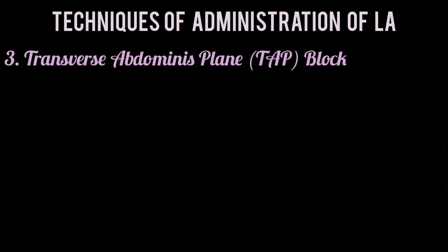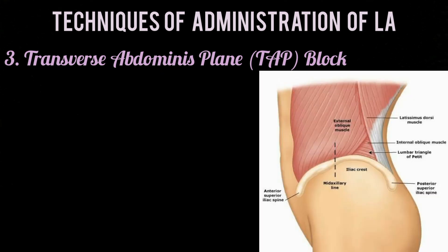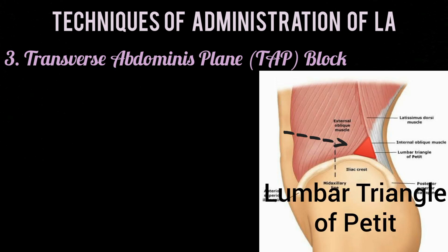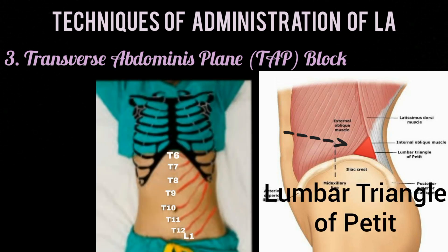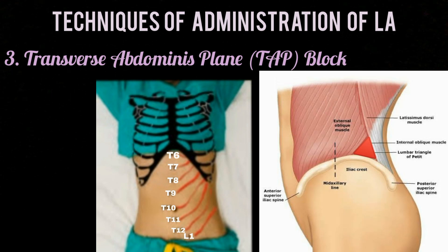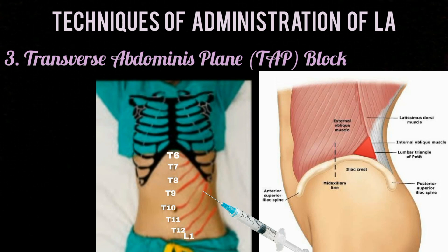To understand the technique better, recall the anatomy of the abdominal wall. The lumbar triangle of Petit is identified, and the T6 to L1 segmental nerves enter just medial to the anterior axillary line. After injection of the anesthetic, these nerves are blocked and excellent anesthesia of the anterior abdominal wall is achieved.